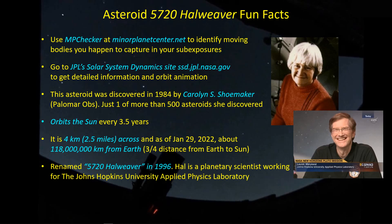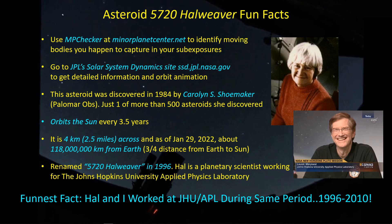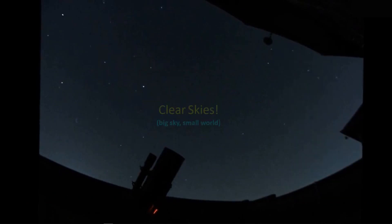The object was renamed 5720 Hal Weaver in 1996. Hal is a planetary scientist who I assume was honored for his contributions. He's currently working at the Johns Hopkins University Applied Physics Laboratory and is involved in the New Horizons mission to Pluto, very actively involved in planetary science and NASA missions run out of APL. The funnest fact of all is that Hal and I both worked at JHU APL during the same period — I started there in 1994, he came in 1996, and I left in 2010 while he's still there. Our paths really didn't cross as he was working in the space department and I was working for Navy Missile Defense. It's a small world. Thanks for all the help in tracking down what this observation was — clear skies, and I'll talk to you guys later.